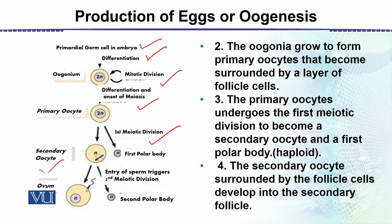We see that the secondary oocyte and polar body are formed — the number of chromosomes is reduced to half. The primary oocyte, which was diploid, is now haploid as the secondary oocyte. In meiosis I, the spindle formation is not in the center but becomes eccentric. The cell divides with unequal distribution of the cytoplasm, and the smaller cell is the first polar body.